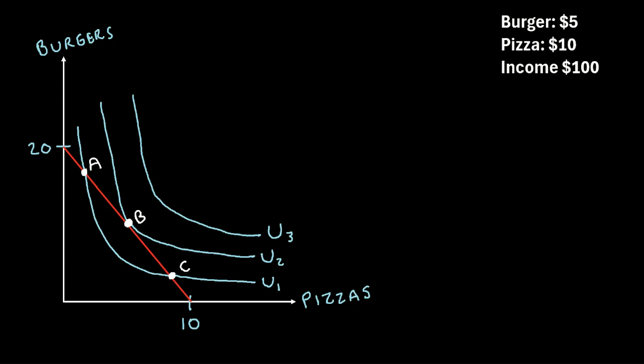In this video, I will explain the relationship between the budget line and indifference curves in microeconomics. So consider the following example: let's say that burgers cost $5 each, pizzas cost $10 each, and you have a total income of $100.